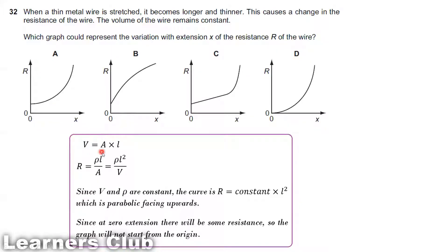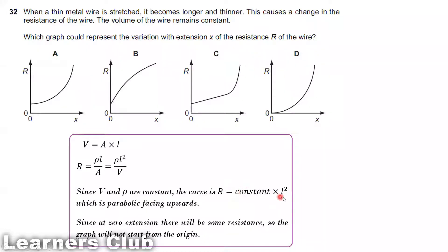Volume equals cross-sectional area A times length L. We don't have the equation in terms of volume, so multiplying both sides by L gives us resistivity times L squared on one side and area times L — which is volume — on the other. Since volume V and resistivity ρ are both constant, resistance equals a constant times L squared.